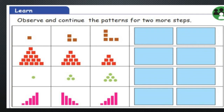Observe and continue the patterns for 2 more steps. First one — how many squares? 1, 3, 5. It is increasing: 1 plus 2 is 3, 3 plus 2 is 5, 5 plus 2 is 7, and 7 plus 2 is 9. Now the second one: 15, 10, 6. It is decreasing — decreases by 5, then 4, then 3, then 2. So the answer will be 3 and 1.